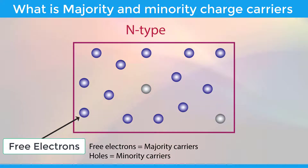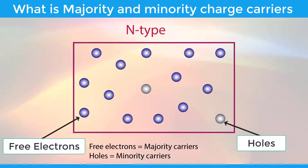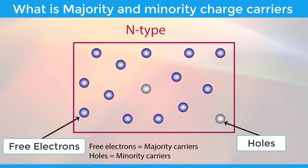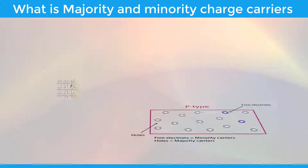In N-type semiconductor, a very small number of holes is present. Hence, holes are the minority charge carriers in the N-type semiconductor, and they carry only a small amount of electric charge or electric current. The total number of negative charge carriers (free electrons) in an N-type semiconductor is greater than the total number of positive charge carriers (holes). So, total negative charge carriers is greater than total positive charge carriers.